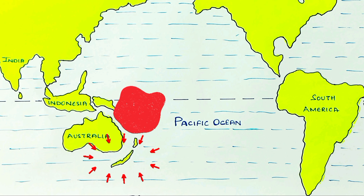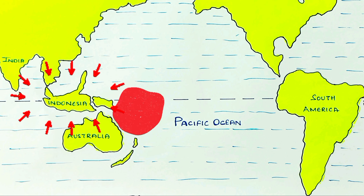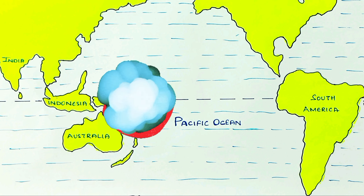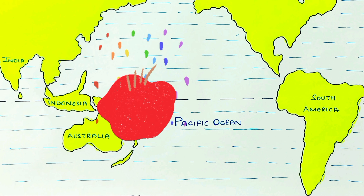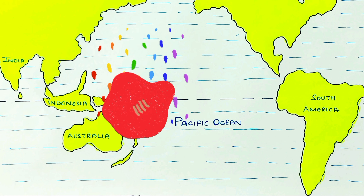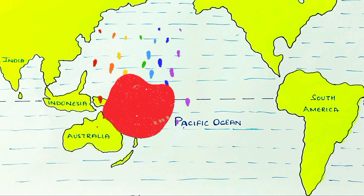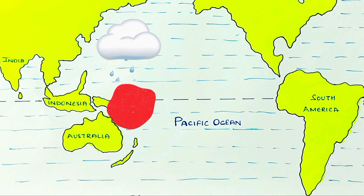The regions around New Zealand, Australia, and Indonesia get warmed, increasing the temperature and moisture content. Hence, through the process of convection, the warm air rises high into the atmosphere, then cloud formation takes place resulting in rainfall.